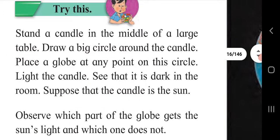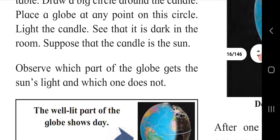Try this: Stand a candle in the middle of a large table. Draw a big circle around the candle. Place a globe at any point on the circle. Light the candle and make sure the room is dark. Suppose that the candle is the sun. Observe which part of the globe gets the sun's light and which one does not.